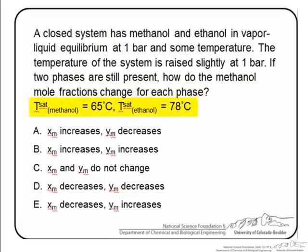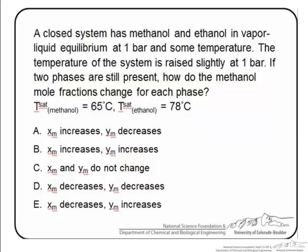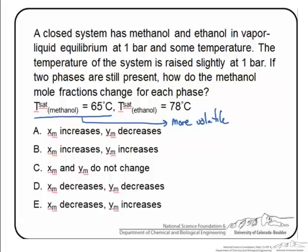We are given that the saturation temperature for methanol is 65°C and for ethanol is 78°C. At this point, try to solve this on your own before moving forward. From the given information we can see that the more volatile species is methanol, since it has a lower saturation temperature. The best place to start with a problem like this is by drawing a Txy diagram showing the phase equilibrium between these two species.